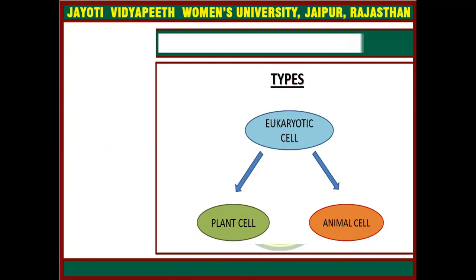The eukaryotic cells are of two types: the first one is plant cells and the second one is animal cells. Without these, other types of cells may also exist, but they have similarities. The difference is mainly between the plant cells and the animal cells. Other types of organisms include fungi, yeast, and algae, which are also included in the eukaryotes.